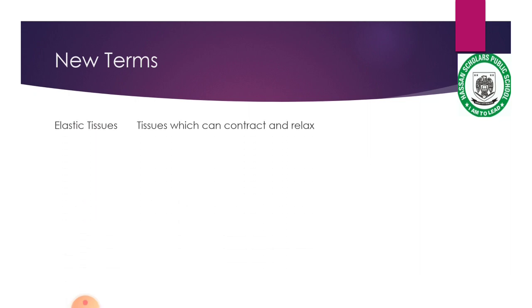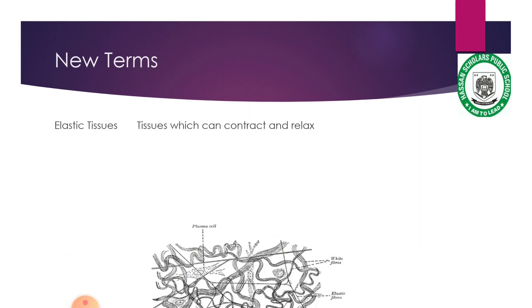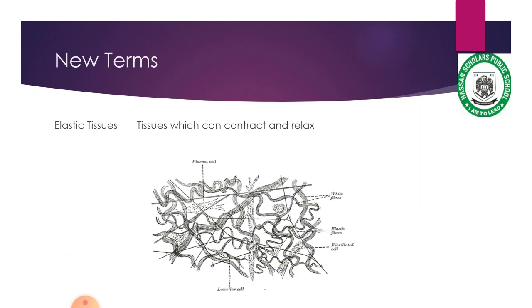Next one is elastic tissues. Elastic tissues are tissues which can contract and relax. They can move and relax. This is the name of the elastic tissues in the body.